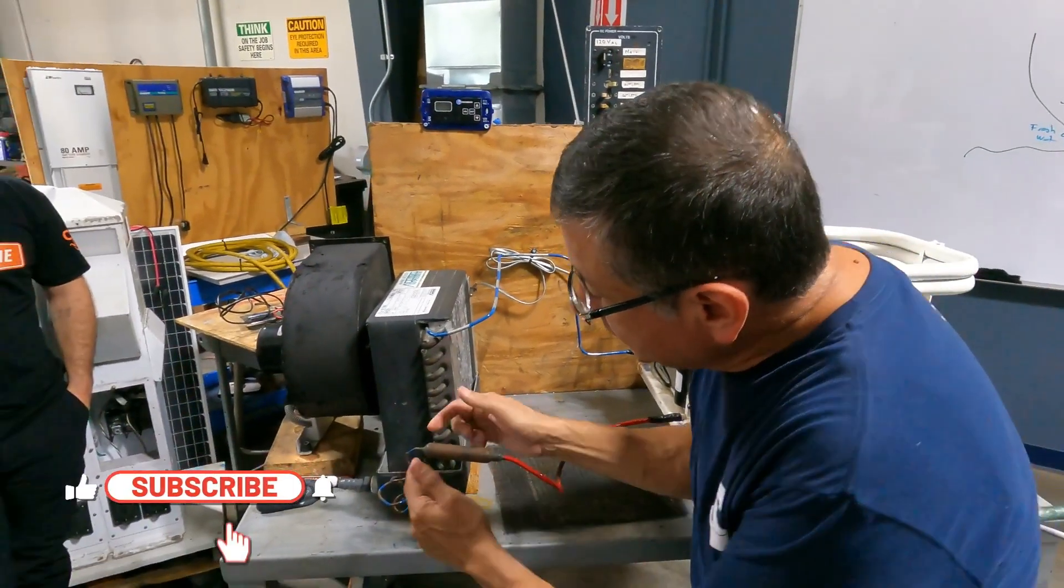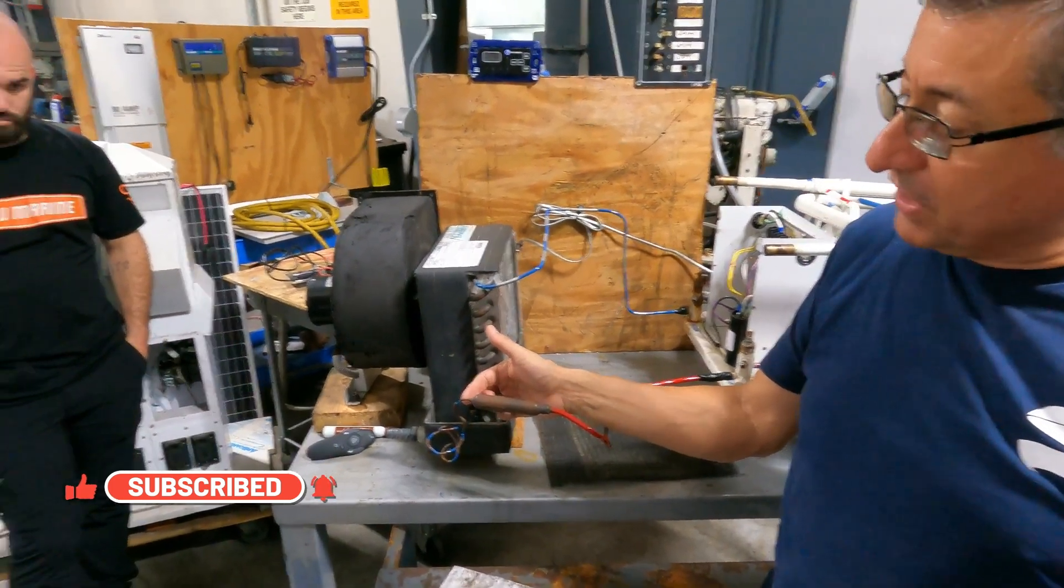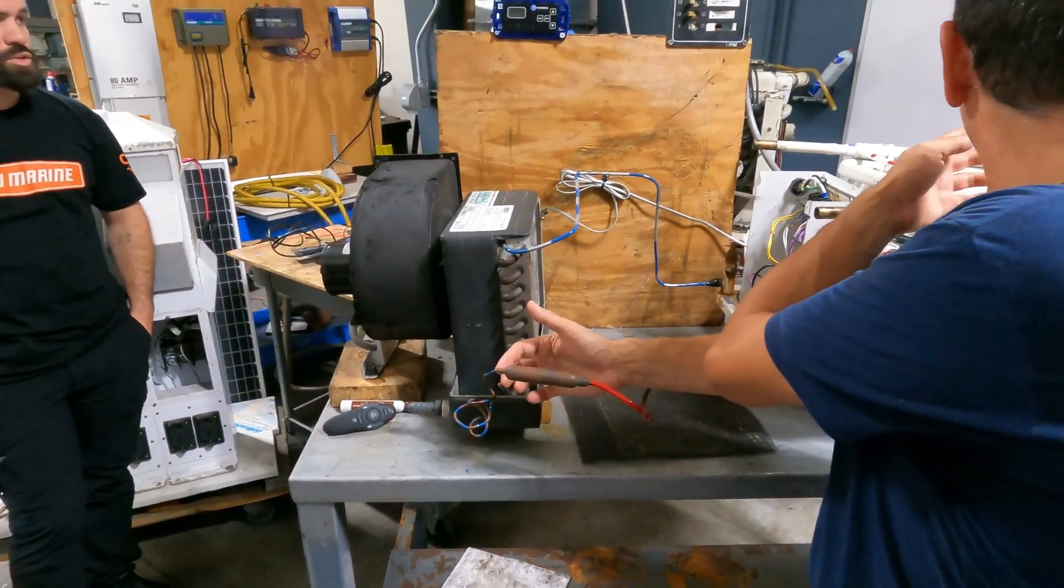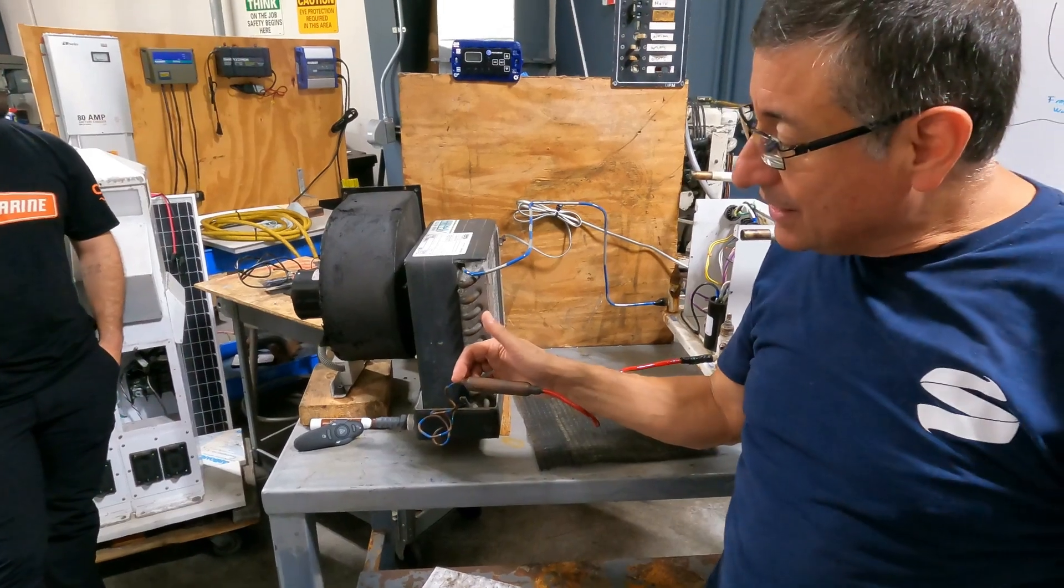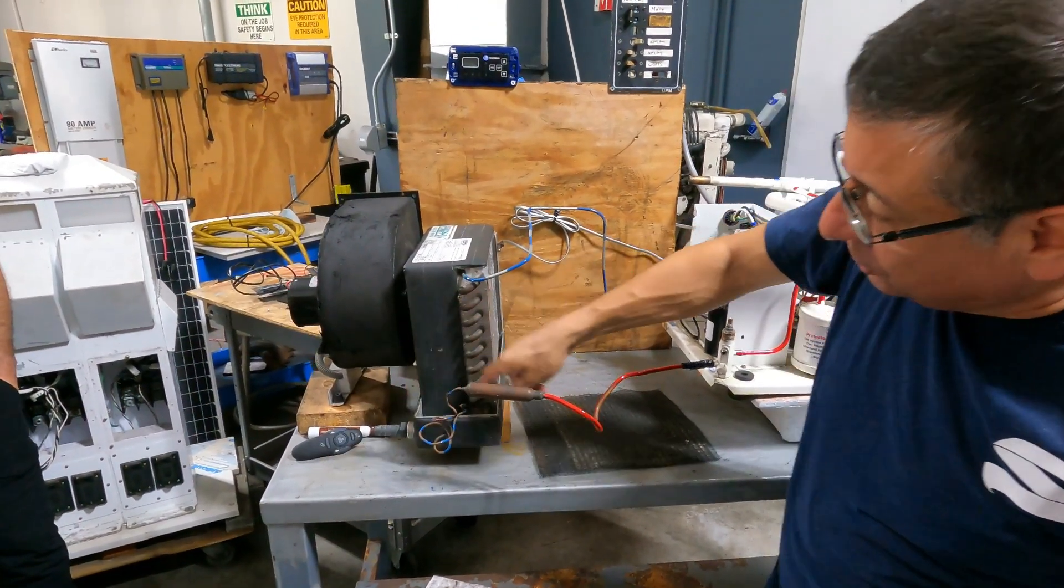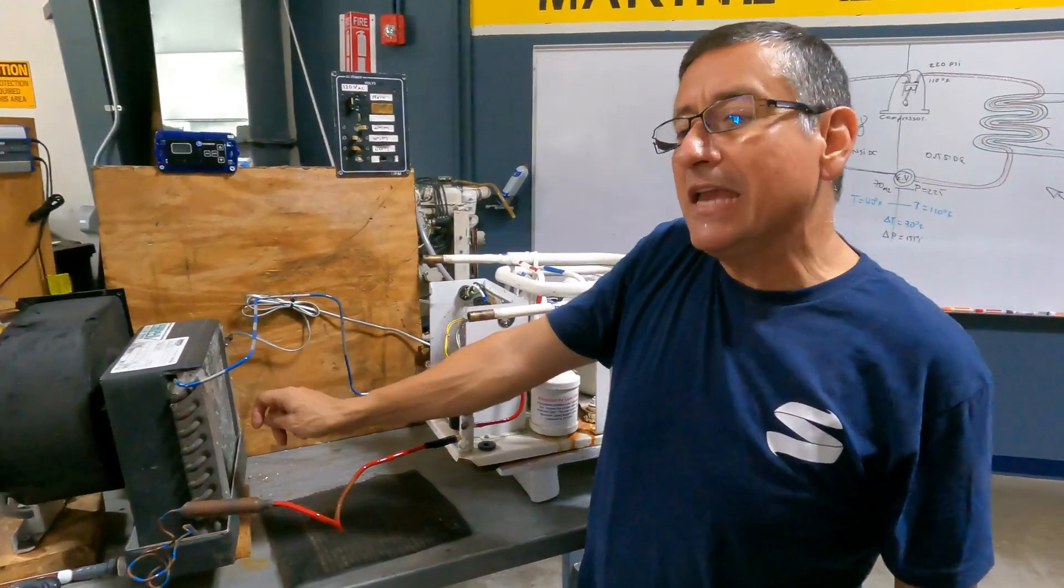But because the diameter is reduced dramatically, what is the pressure and temperature of the refrigerant here? It's lower. We say that around 40 degrees Fahrenheit and 70 psi here. And the capillary pipe continues and enters in the bottom of this radiator.